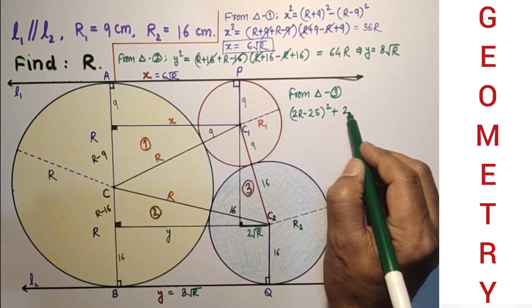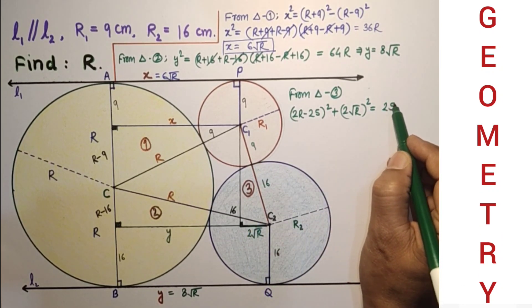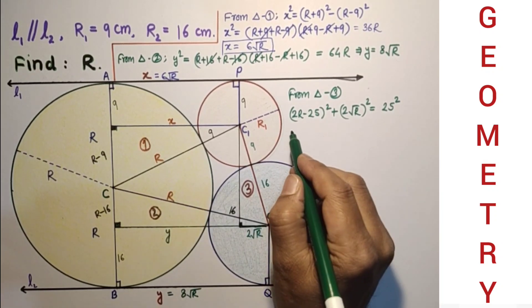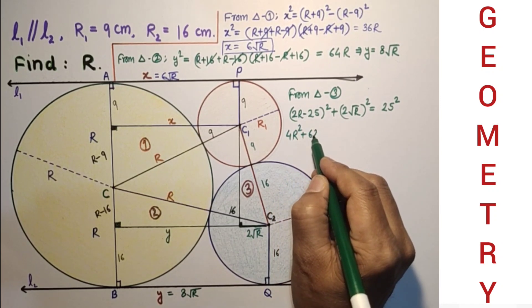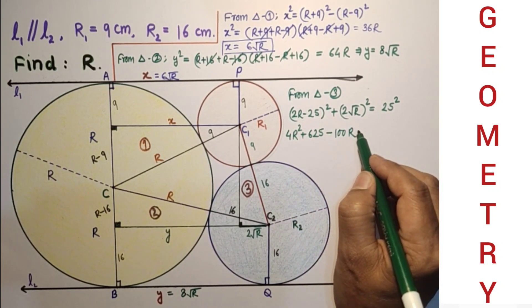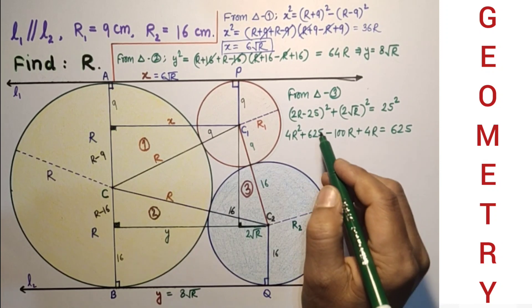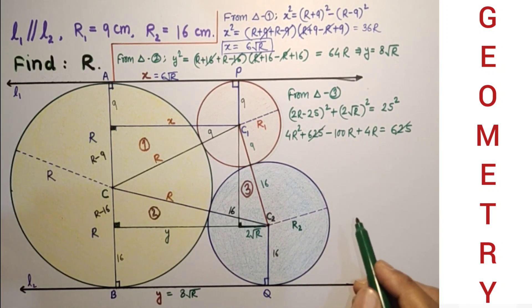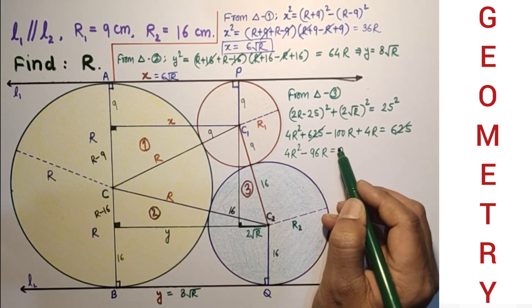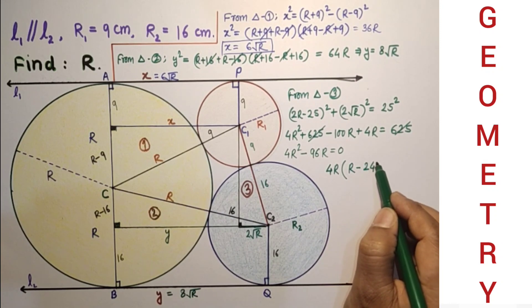(2√R)² plus (2R-25)² equals 25². If we simplify it we will get 4R + 625 minus twice the product of these two which is 100R. 4R plus 4R which is 625, and 625 will get cut, and this will be 4R² minus 96R which equals 0. After taking 4R common we are getting R minus 24 which equals 0.